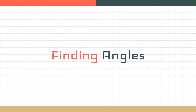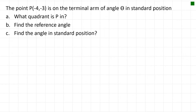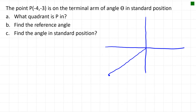We're now going to use our knowledge of trigonometry to find angles in standard position to find missing angles. The first step in any problem is to always see if you can make a diagram to visualize the problem. The point (-4, -3) is right here — we're going to draw it with the terminal arm going towards the origin.